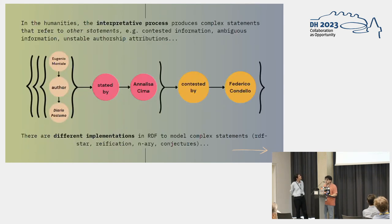But in humanities, the interpretative process can become much more complex. For example, Eugenio Montale as author of the Aero Postumo is something that was stated by another author, Annalisa Cima, but this statement was also contradicted by other researchers such as Federico Condello, who contested the authorship of the Aero Postumo by Eugenio Montale. So this is the kind of information we often have to deal with in the cultural heritage domain, especially in the field of philology, history, and so on. And it can be contested, can be ambiguous, for example, or in the case of unstable or debated authorship attributions.